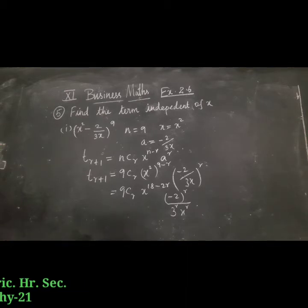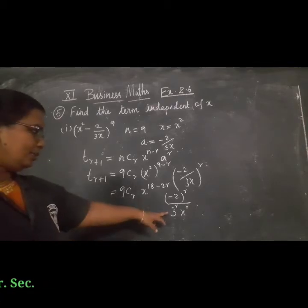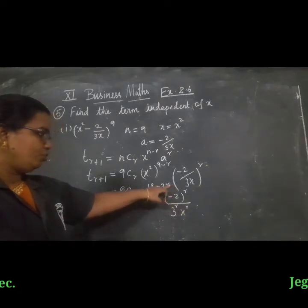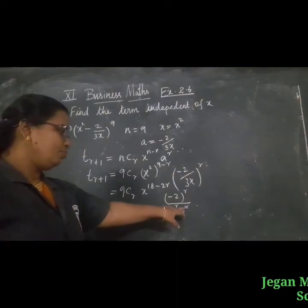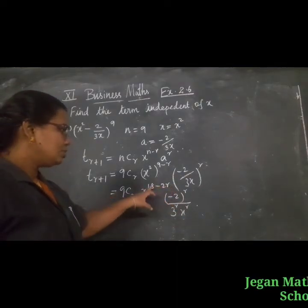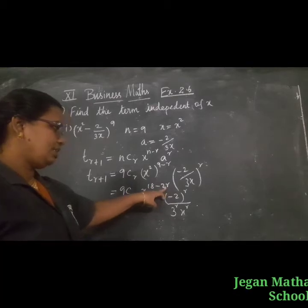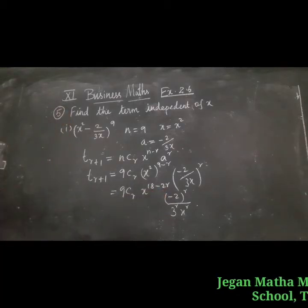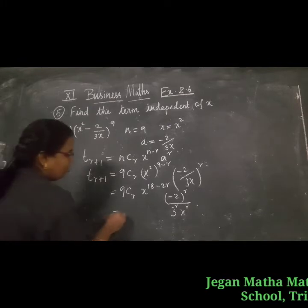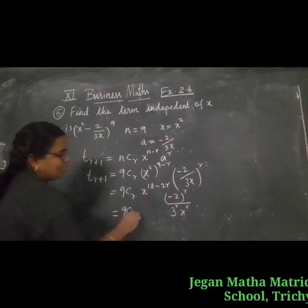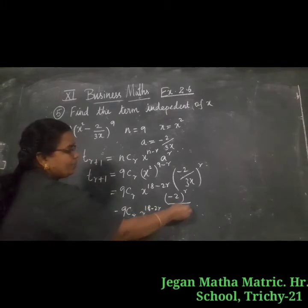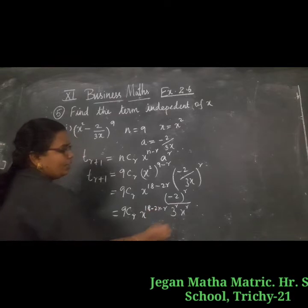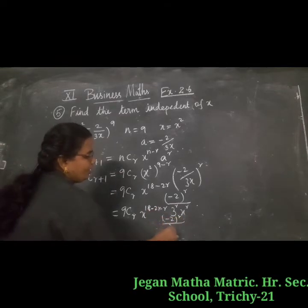We get x power 2n minus 2r, and since x to the power r goes into the denominator giving minus r, the net power of x becomes 2n minus 3r. So t(r+1) equals nCr times x power 2n minus 3r times minus 2 power r divided by 3 power r.